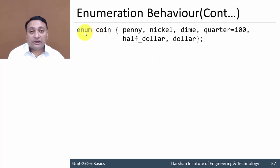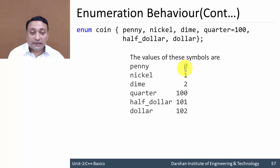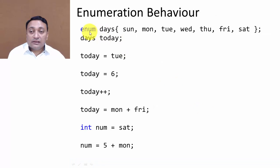Here is an example with an enumeration called 'coin'. Its members are: penny, nickel, dime, quarter with value 100, half dollar, and dollar. By default, penny gets 0, nickel gets 1, dime gets 2. But from 'quarter' we specified 100, so it starts from 100 and then continues 101, 102, and so on.